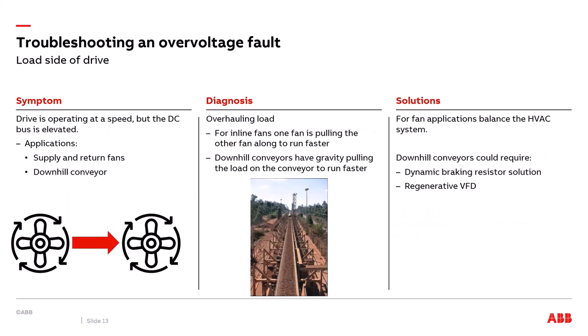Another symptom is a constantly elevated DC bus voltage above the nominal idealized value when the drive is running. This means something is causing the motor to act as a generator and pump energy back into the VFD. Common applications include supply-return fan systems and downhill conveyors. In a supply-return fan system, the supply fan — often double the horsepower of the return fan — can create a pressure differential that pulls air across the return fan faster than the return fan VFD is trying to run it, causing the return fan motor to spin faster than its applied voltage and frequency, turning it into a generator that boosts the DC bus to potentially the trip level.